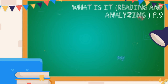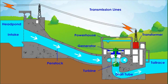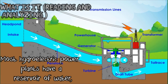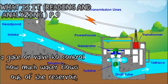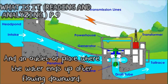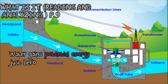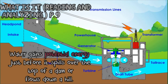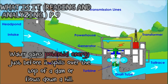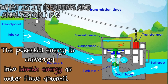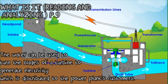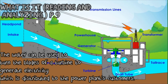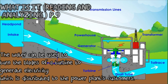How does hydroelectric energy work? Most hydroelectric power plants have a reservoir of water, a gate or valve to control how much water flows out of the reservoir, and an outlet where the water ends up flowing downward. Water gains potential energy just before it spills over the top of a dam or flows down a hill. This potential energy is converted into kinetic energy as it flows downhill. The water is then used to turn the blades of a turbine to generate electricity, which is distributed to consumers.